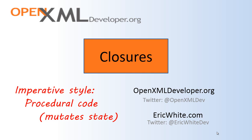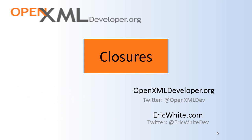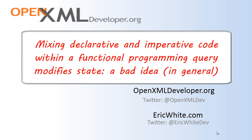Imperative code almost by definition requires that you mutate state. For instance, you have classes, you have state in those classes, you're writing code that tells how to operate with an object of that particular class, and that code makes use of that state in that object. And if you mix imperative procedural code with declarative functional code, you would often end up trying to modify state in the middle of a functional programming query.